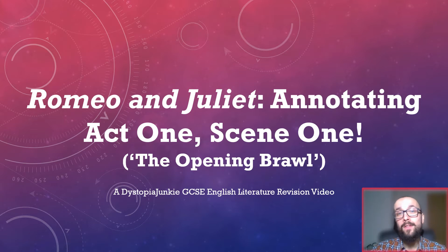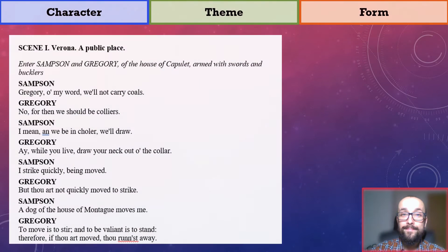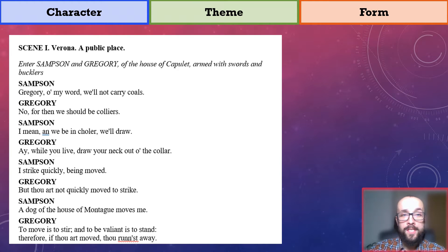So, which annotations could we make for Act 1, Scene 1? I'm going to be making annotations that relate to the play's characters, themes, and form. When I say form, I mean how this extract functions as a piece of drama.